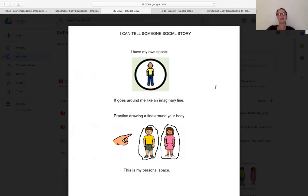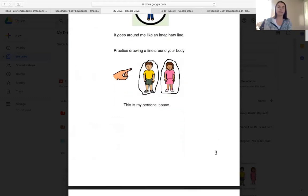Our story this week is called I Can Tell Someone. I have my own space. It goes around me like an imaginary line. Practice drawing a line around your body. This is my personal space.